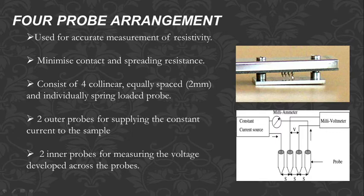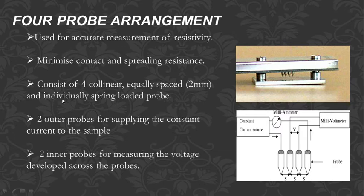The four-probe arrangement is used for accurate measurement of resistivity and minimizes contact and spreading resistance. It consists of four collinear, equally spaced, two-millimeter, individually spring-loaded probes. The two outer probes are used for supplying the constant current source.